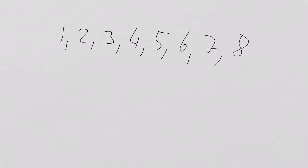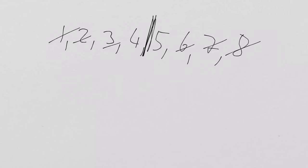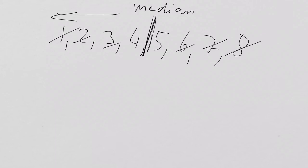Now in this case you had it quite good because it was an odd number of data points. What if you have 8 data points — 1, 2, 3, 4, 5, 6, 7, 8? Then the median would be four and a half — halfway through. This means 50% of the data are smaller than the median and 50% are larger than the median.